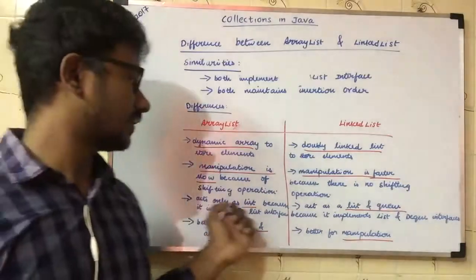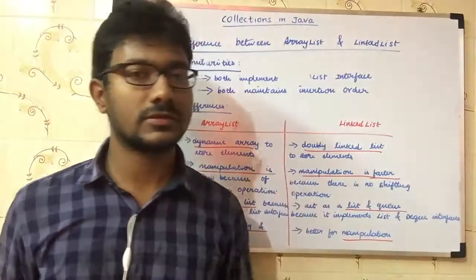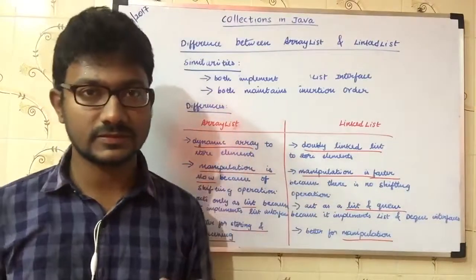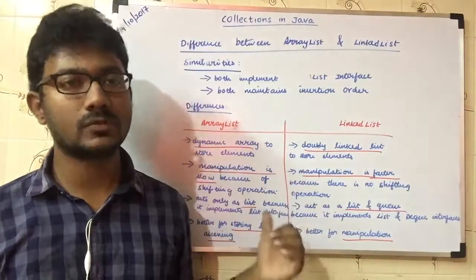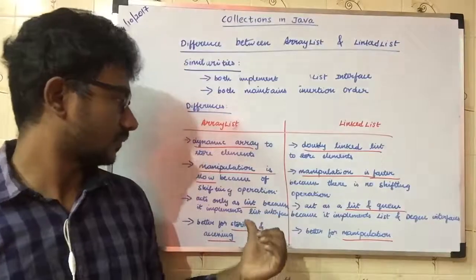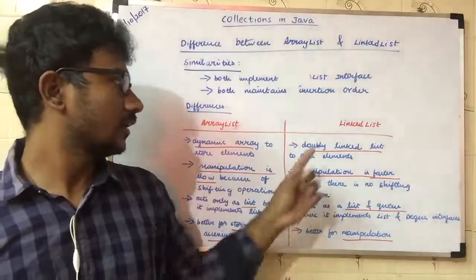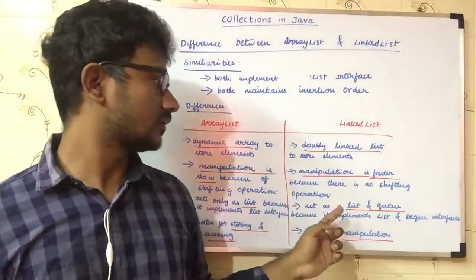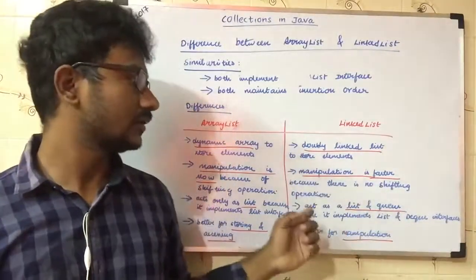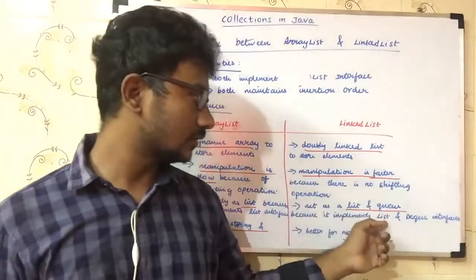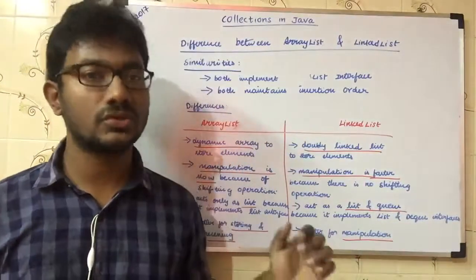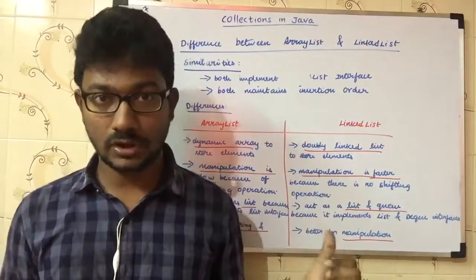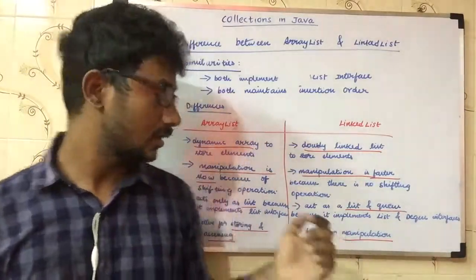ArrayList acts only as a list because it implements only the List interface. But LinkedList can act as both a list and a queue because it implements both the List and Deque interfaces. This is an important point.